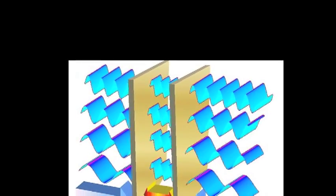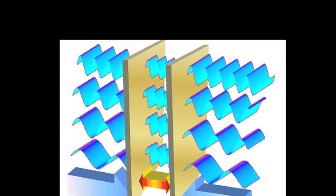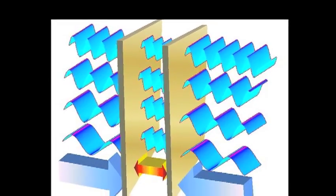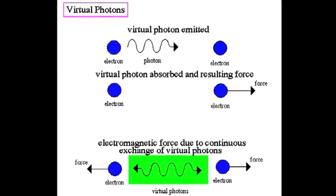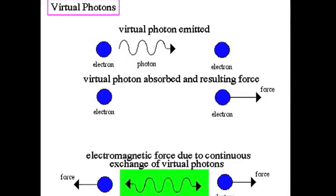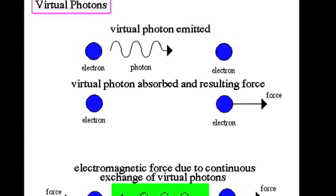Surprisingly, two conducting uncharged parallel plates attract each other in a vacuum. The reason is that there are always virtual photons. Photons are particles of light.